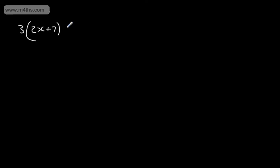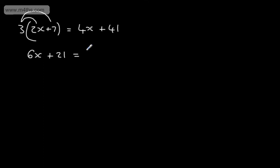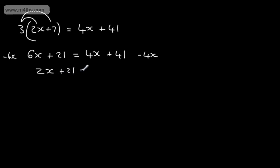Let's now introduce something slightly different: 3 lots of 2x plus 7 is equal to 4x plus 41. This time we've got single brackets. So we need to multiply out the brackets and go ahead and solve. We multiply everything on the outside by the inside: 3 times 2x is 6x, 3 times 7 is 21. That's equal to 4x plus 41. Now I'm back to solving normally, subtracting 4x from both sides, leaving 2x plus 21 is equal to 41.